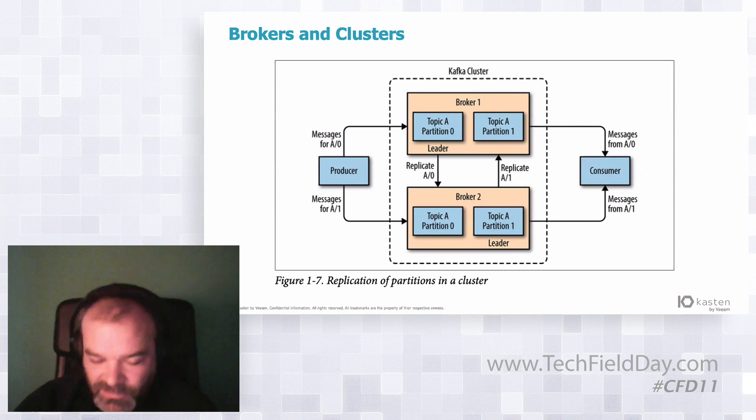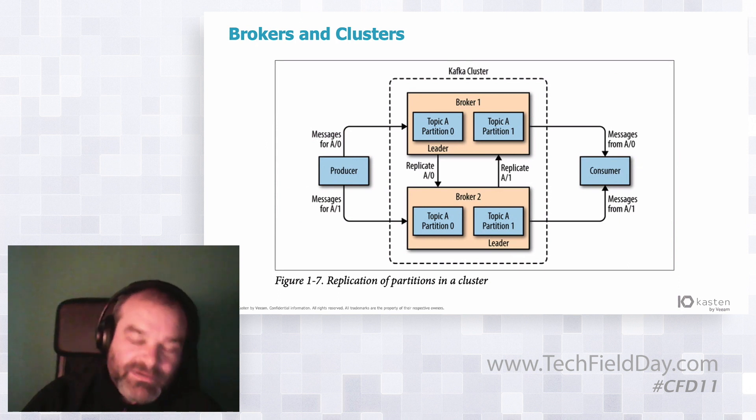And to improve the resilience and the high availability of the Kafka cluster, we have this notion of replication. So one of the partitions is the leader and the other one is the replicate. So if the leader is failing, then the replicate is keeping up and taking the place of the leader. So you have a very high availability, highly scalable system to handle messages and to give messages to read. And that's what Kafka is.